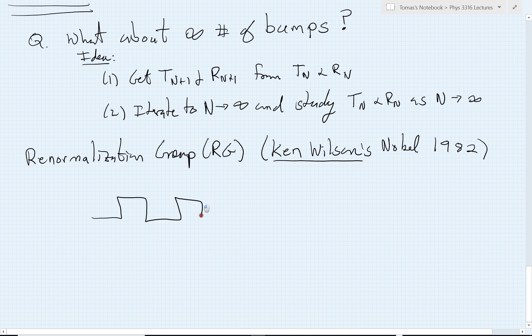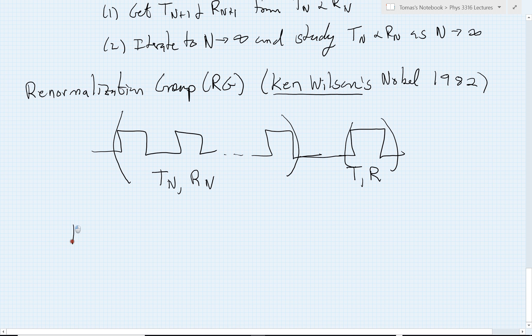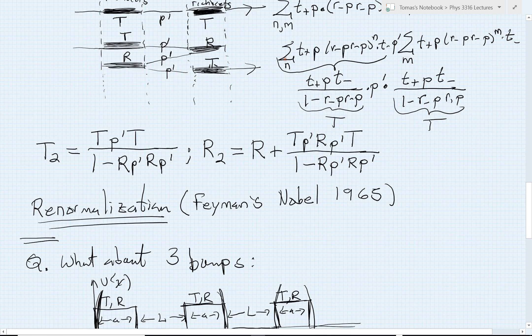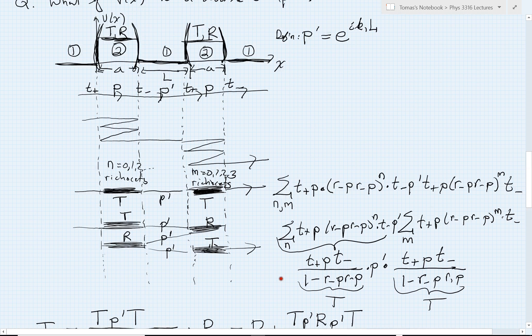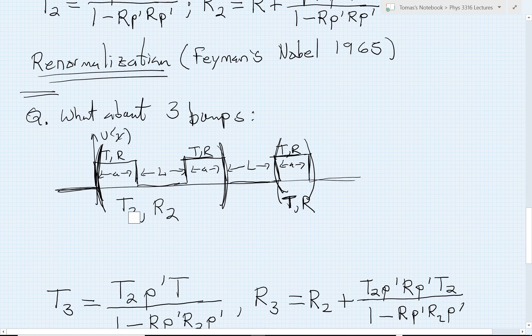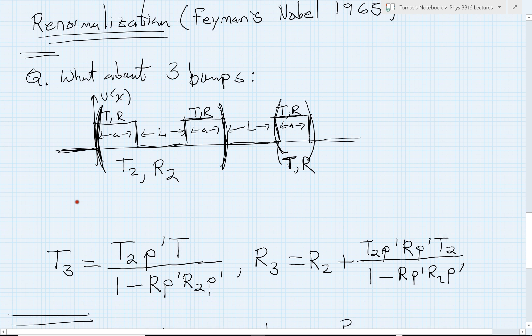We would start with the answer for n bumps, like so, and I would bracket those guys all together. So this will become a Tn and an Rn, and then I'll have my little propagation region where I have my final bump, which has a net transmission and reflection of just T and R. And we iterate the same exact formula that we had before. It's going to be really exactly the idea of going from 2 to 3, right? Except now, instead of writing down that it's 2 going to 3, it's really just n going to n+1.